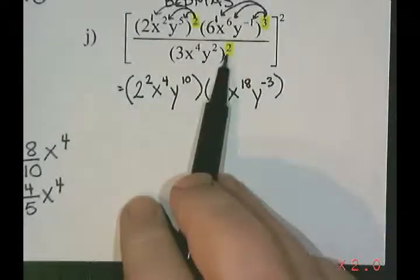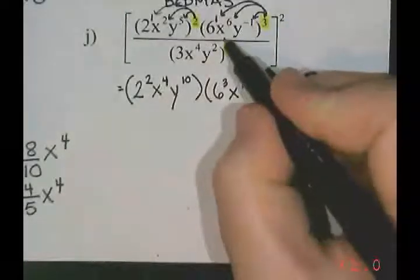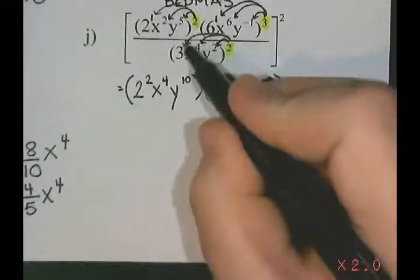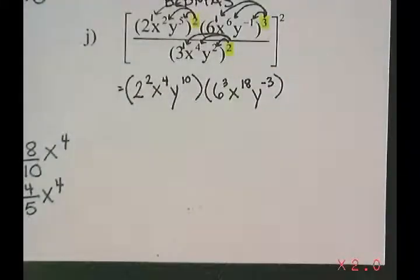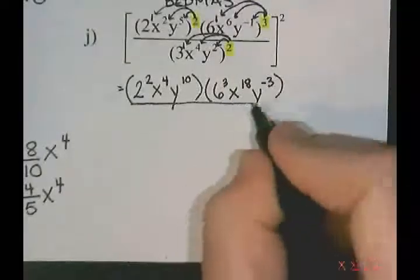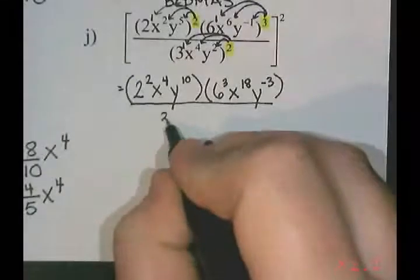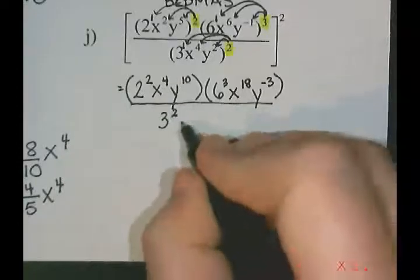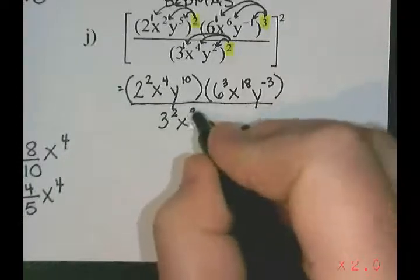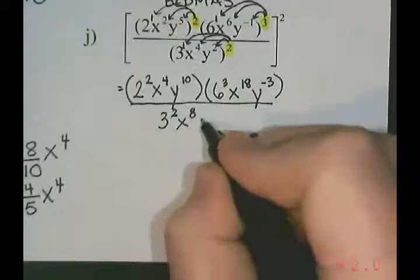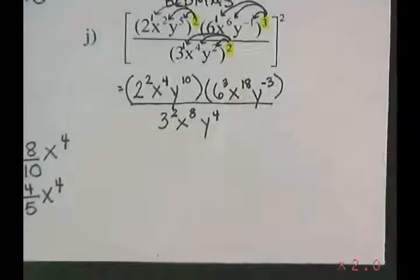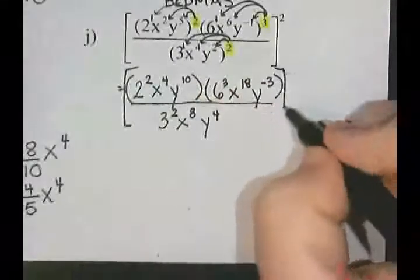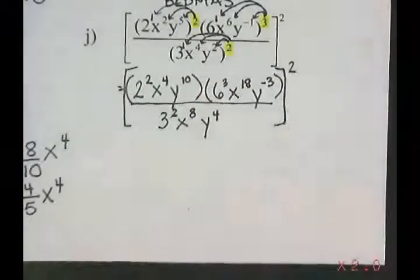In the denominator, we're going to distribute the power of 2: 2 times 2, 2 times 4, and 2 times that secret 1 on the power of 3. So this is all divided by 3 to the power of 1 times 2, which is 2; x to the power of 4 times 2, which is 8; and y to the power of 2 times 2, which is 4. And don't forget, that is all still in a big set of brackets to the power of 2.